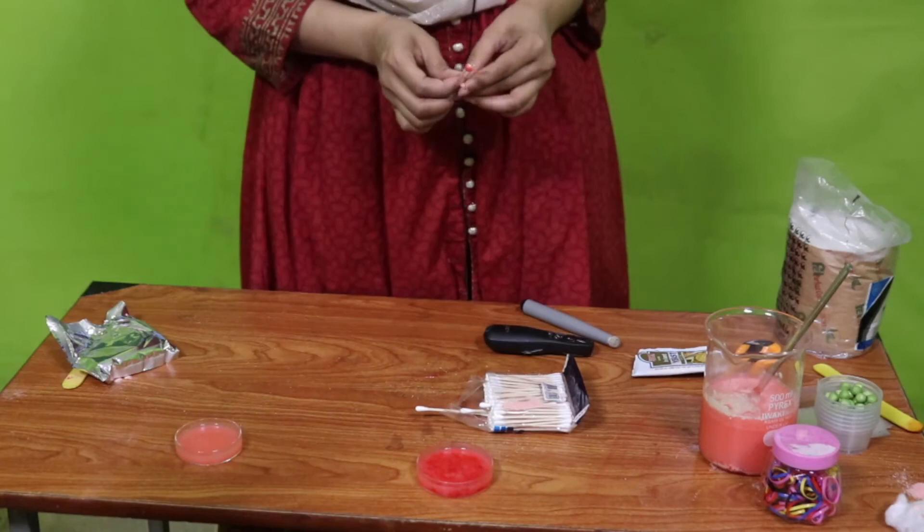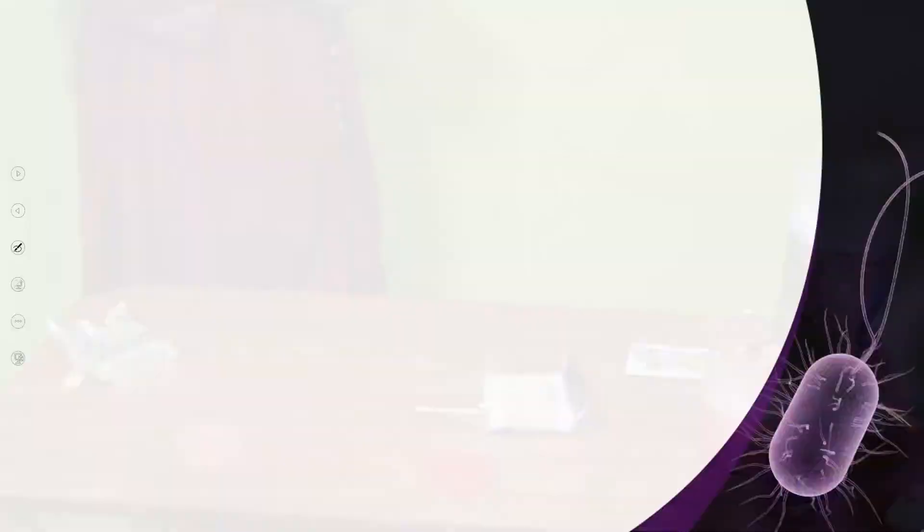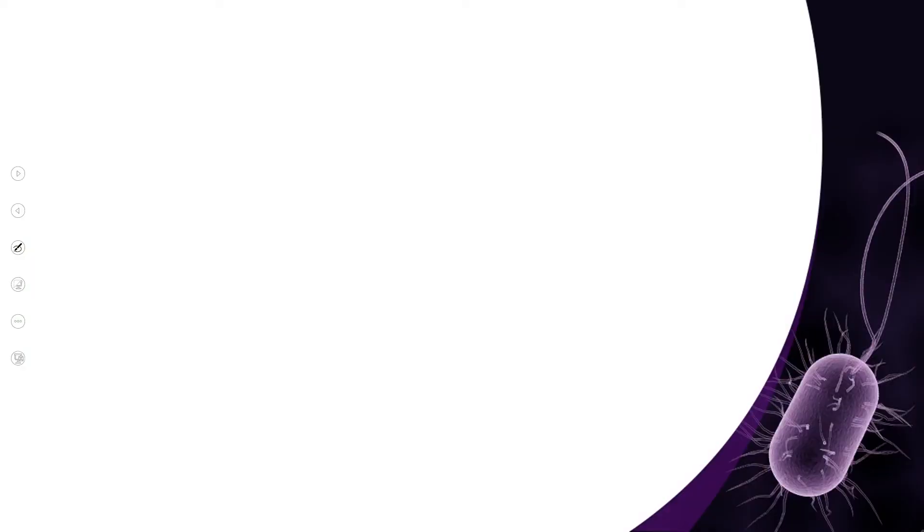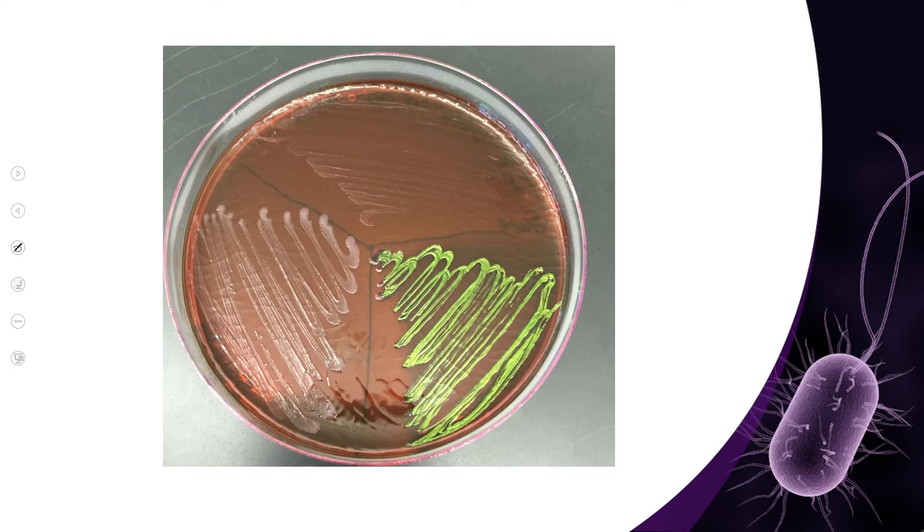Now let it stay for 24 hours. After that, what you will observe is you will see different microorganisms' growth. There you can see the petri dish, and in this you can see after 24 hours microorganisms' growth is visible. These are the streaks that we made, and after that on this you can see the visible microorganisms' growth.